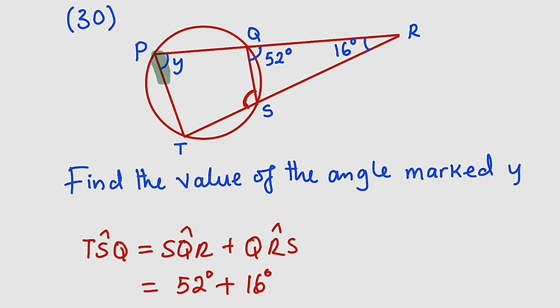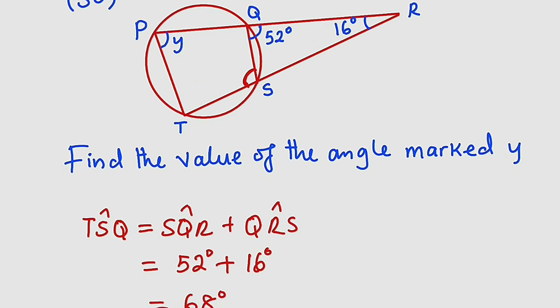This is a cyclic quadrilateral. One thing you should remember about cyclic quadrilaterals is that the sum of the opposite angles is supplementary, meaning if you add them together you're going to get 180.